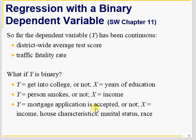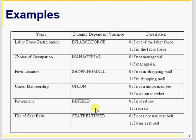So far we have been discussing the dependent variable as a continuous variable. Now we consider cases like whether you will get into college or not, whether a person smokes or not, whether you are in the labor force or not, whether you are at a managerial position or not, whether you are in a shopping mall or not, whether you are a union member or not, whether you are retired or not. Previously all these dummy variables were only used as explanatory variables, but in this case we are considering a dummy variable — a binary variable — as the dependent variable.